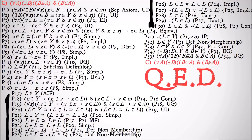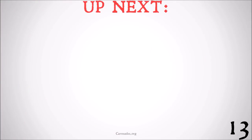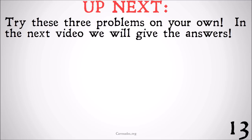If you were able to do that whole proof, props to you — it's quite difficult. Great work if you were able to follow along. If you think there are any mistakes in here or have any comments, please leave them in the comments below. We're going to call this specific statement the Ordinary Set Theorem for future proofs, because it's a useful statement to have.